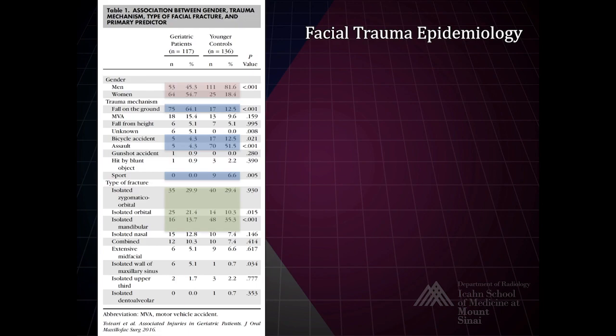When one examines the mechanisms, there are some differences as well. Older patients tend to have falls as the most likely cause, whereas in younger patients, sporting accidents including bicycle injury and assault in particular tend to be most prominent. Looking at the type of fracture, isolated orbital injuries are more common in the geriatric population, and isolated mandibular injuries are more common in the younger patient.